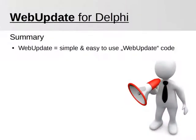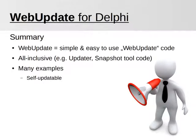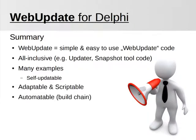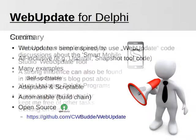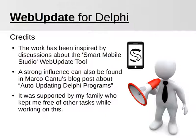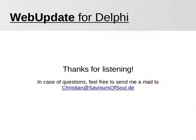Let us conclude with a summary. With WebUpdate, a simple and easy-to-use library is available that comes with several tools and examples. The supplied authoring tool is capable of a WebUpdate itself, showing how a self-updatable application can be built. By using scripts, it's possible to adapt it easily to most needs, and it can be automated in build chains. The open-source project is hosted at GitHub, which makes it easy to fork, and handles the dual license requirements since all modifications can easily be streamed back to the original project. The work was inspired by discussions about the Smart Mobile Studio WebUpdate tool and Marco Cantu's blog post about auto-updating Delphi programs. Thanks for listening. For questions, feel free to send an email to christian@saviorsofsoul.de.